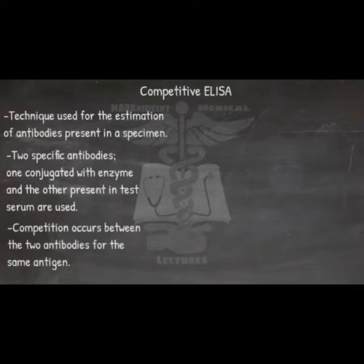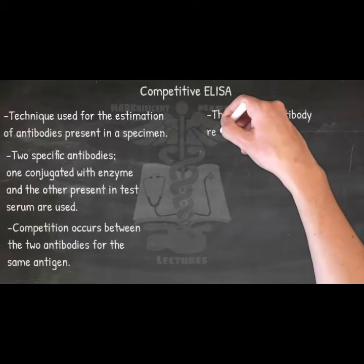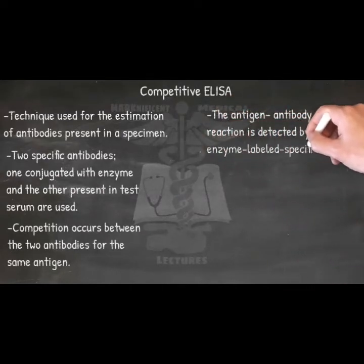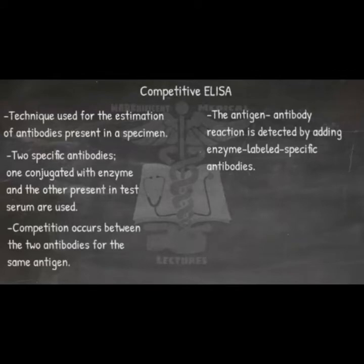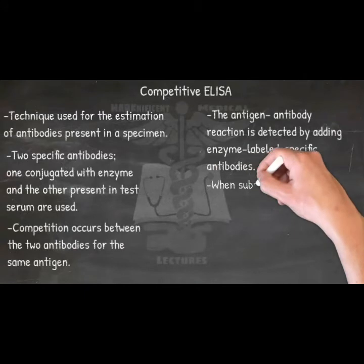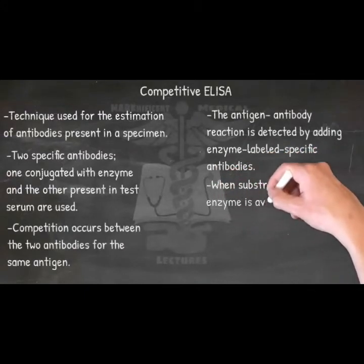In this test, the microtiter wells are coated with antigen. The serum to be tested is added to these wells and incubated at 37 degrees Celsius, then washed. If antibodies are present in the test serum, an antigen-antibody reaction occurs. The antigen-antibody reaction is detected by adding enzyme-labeled specific antibodies. In a positive test, no antigen is left for these antibodies to act on, so the antibodies remain free and are washed away during the process of washing. When substrate is added, no enzyme is available to act on it.